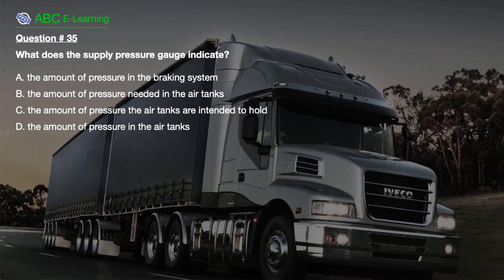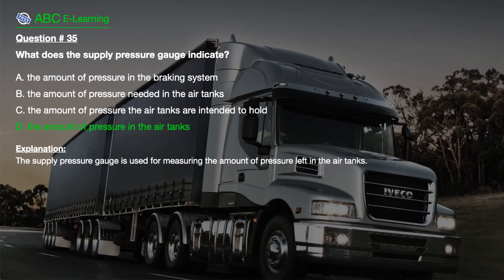Question number 35. What does the supply pressure gauge indicate? A. The amount of pressure in the braking system. B. The amount of pressure needed in the air tanks. C. The amount of pressure the air tanks are intended to hold. D. The amount of pressure in the air tanks. The correct answer is D. The amount of pressure in the air tanks.